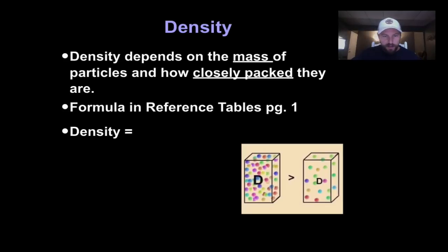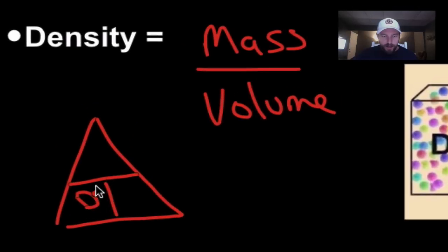So, like we said, density equals mass over volume. Or the triangle, three spots, three letters. There you go. Density equals mass over volume.